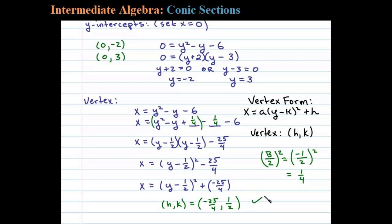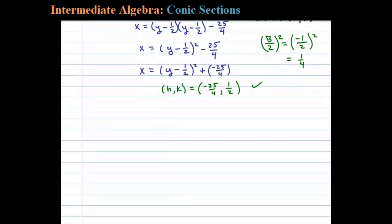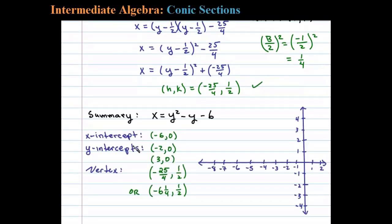Okay, once we have our x and y intercepts and our vertex, we're ready to graph this. Okay, so remember we found the x-intercept to be at negative 6 comma 0, and then we found the y-intercepts, one at, excuse me let me fix this, 0 comma negative 2 and 0 comma 3.